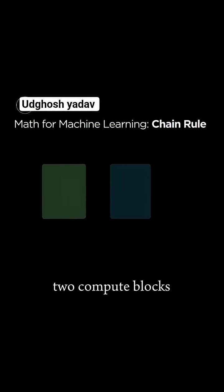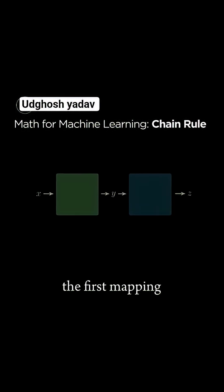Consider the simple example where we have two compute blocks. The first mapping some input x to an output y with the equation y equals 2x, and a second compute block mapping y to z with the equation z equals 4y.